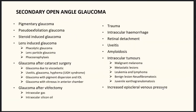Causes of secondary open-angle glaucoma include: pseudoexfoliation glaucoma, pigmentary glaucoma, steroid-induced glaucoma, lens-induced glaucoma (phacolytic, lens particle, phacoanaphylactic glaucoma), glaucoma after vitrectomy, trauma, intraocular hemorrhage, retinal conditions, uveitis, amyloidosis, intraocular tumors such as malignant melanoma and metastatic disease, and increased episcleral venous pressure. Regarding pseudo-exfoliation glaucoma and angle closure — in cases of zonular weakness with anterior lens subluxation, it can potentially cause angle closure.